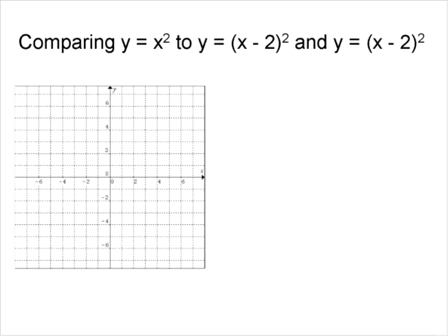Now we're going to compare our original graph y = x² to y = (x - 2)² and y = (x + 2)². So now we have something inside the function. This should be x + 2, not negative.